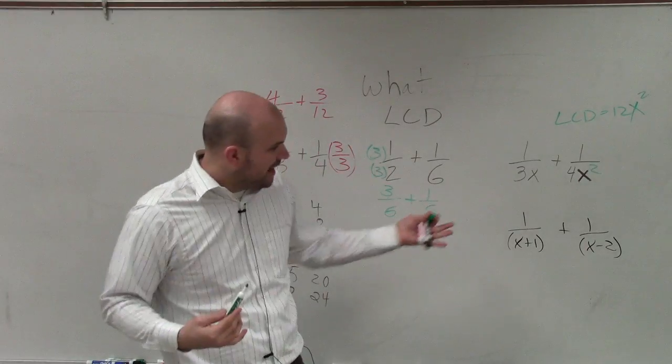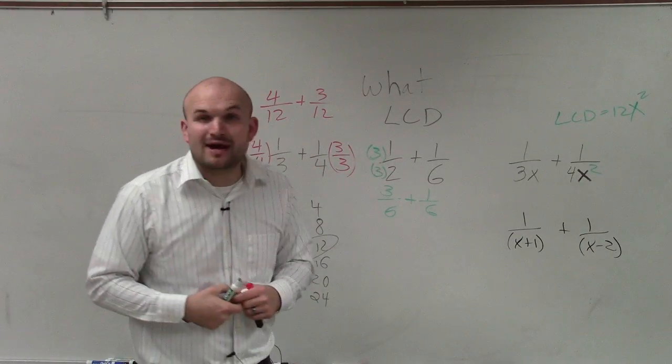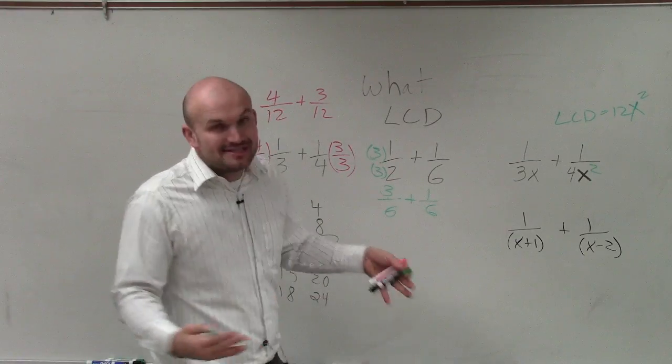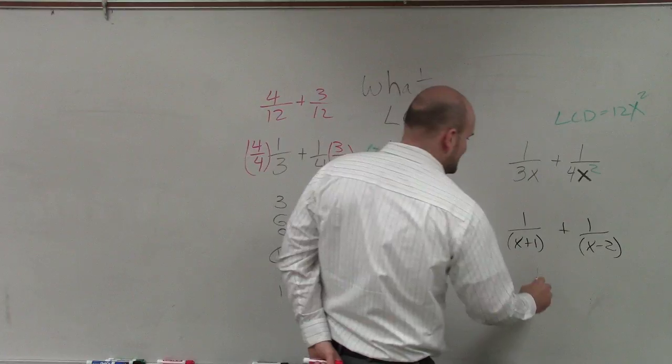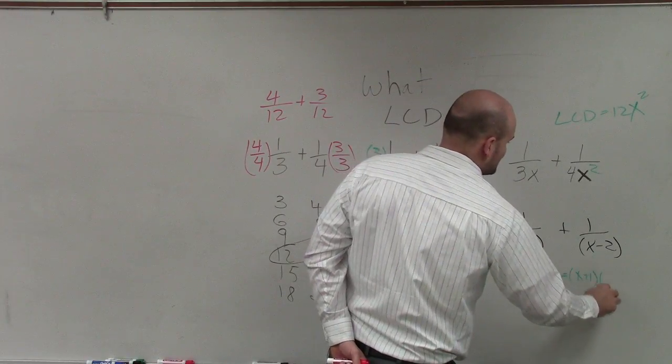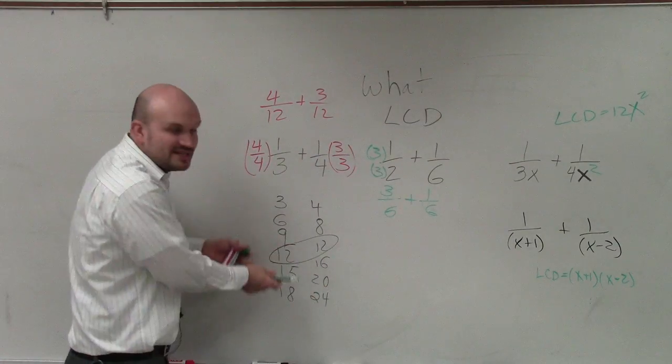Now when I have this expression here, I have some binomials: one over x plus one plus one over x minus two. In this case it really is just going to be your product. My LCD is just going to be x plus one times x minus two, because you can't list the multiples like we did over here.